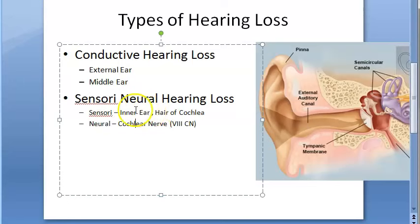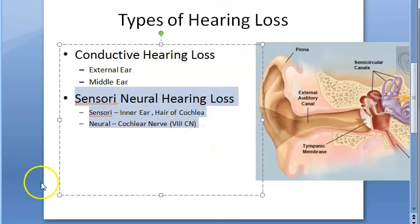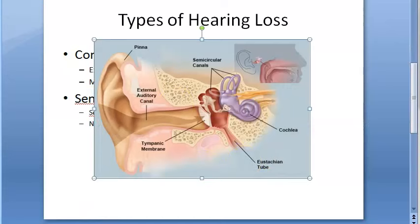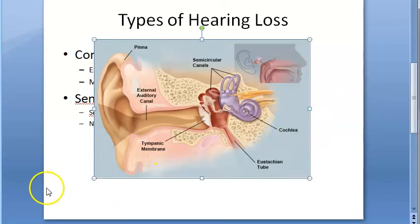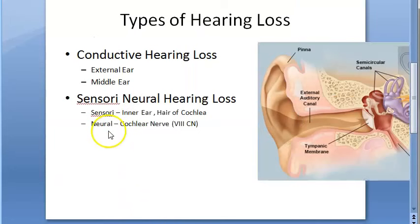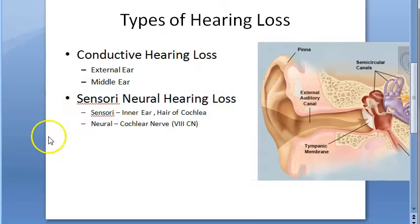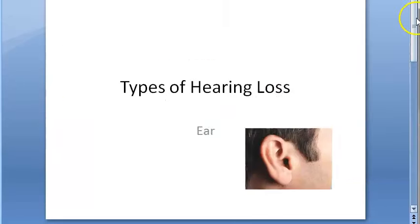Some people have a family history of sensorineural hearing loss. Systemic conditions like diabetes, hypothyroidism, kidney disease, autoimmune diseases, and multiple sclerosis can all affect the hair cells and the nerve. Acoustic neuroma — also called vestibular schwannoma — is a tumor on the eighth nerve that can also cause sensorineural hearing loss. Meniere's disease and age-related hearing loss are additional causes.